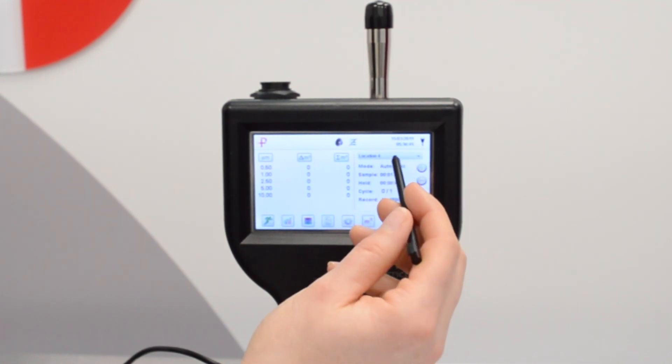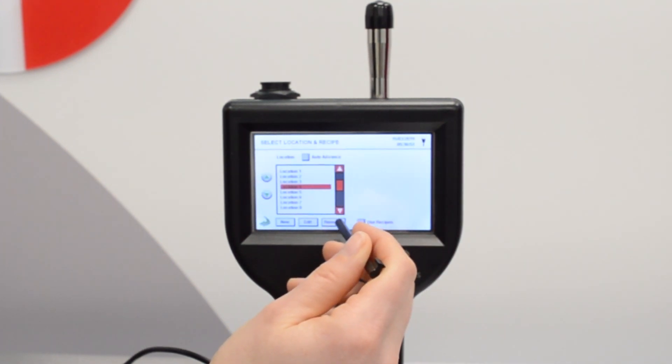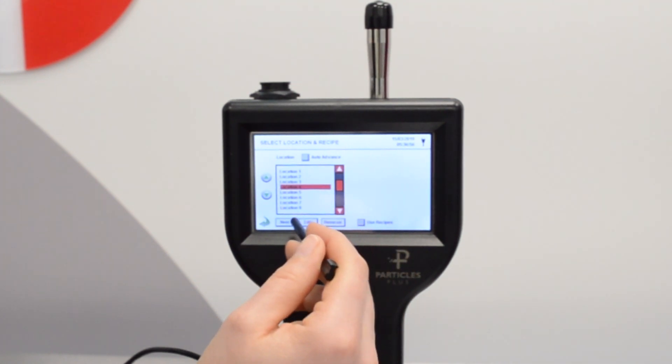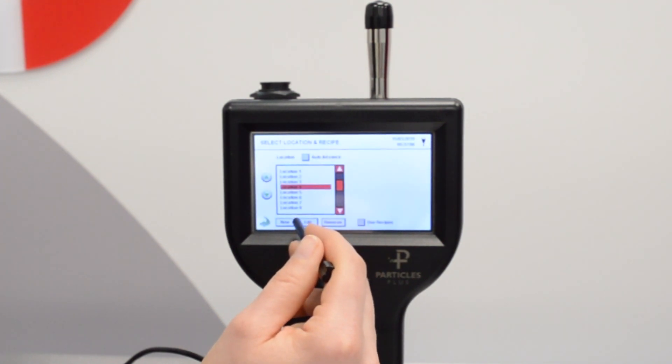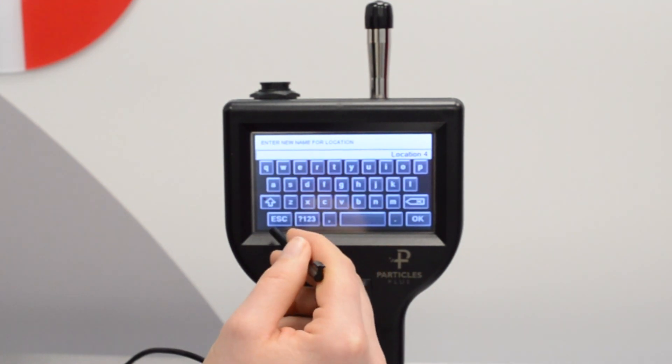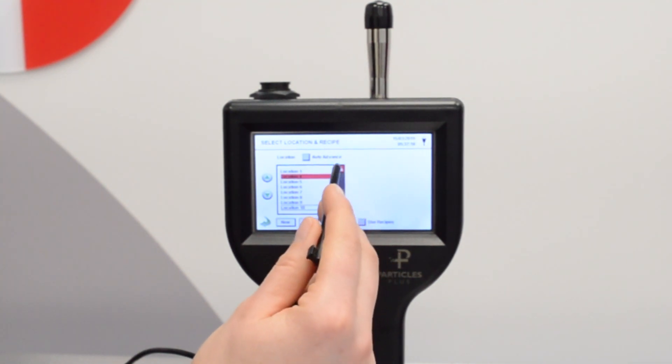From the home screen if you select the location drop down you will see 10 locations listed. If you need to add a location select new, which brings up a keyboard allowing you to name it. Select okay to save. If you need to edit the name of a location highlight it and click edit. To change the order of locations highlight the location and use the arrow keys to move it up and down.